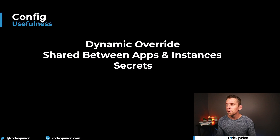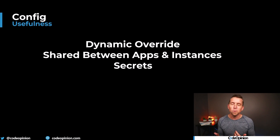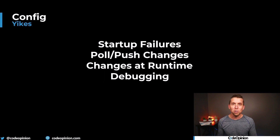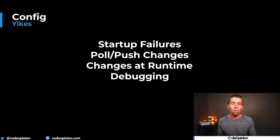The reasons to use a configuration service are: you need dynamic overrides at runtime, you have shared configuration between multiple apps or instances, or — most importantly — you have secrets and sensitive data. The trade-offs and downsides include startup failures if the store is unavailable, complexity in handling push or pull of data for dynamic changes, and the risk that a runtime configuration change could put your system in a bad state. Lastly, debugging is really difficult when all your data comes from a configuration store, especially in production where you don't have the same visibility into what's actually loaded.